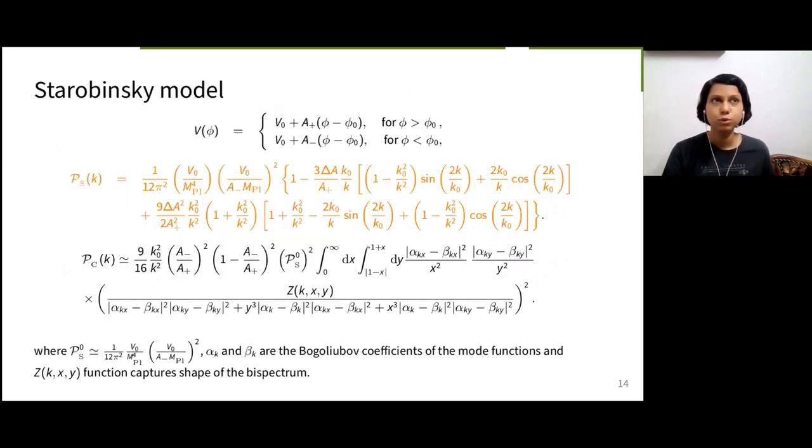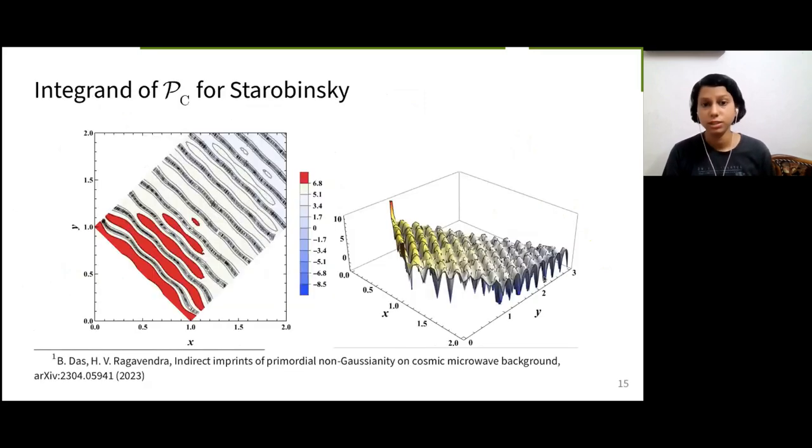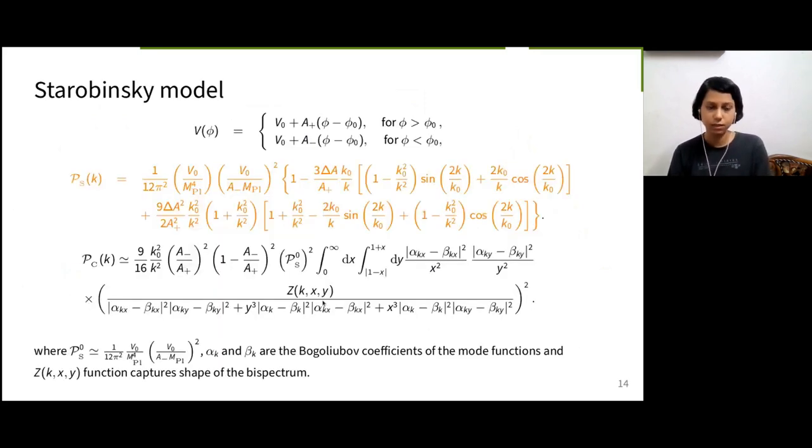Let us come to a more realistic model in literature given by Starobinsky. It is given by this potential with a change in slope at Y0. Computing PC analytically was non-trivial, so we solved it numerically. Just to show how non-trivial it was, here is the contoured plot and corresponding 3D plot of the integrand of PC with X and Y as the variables.